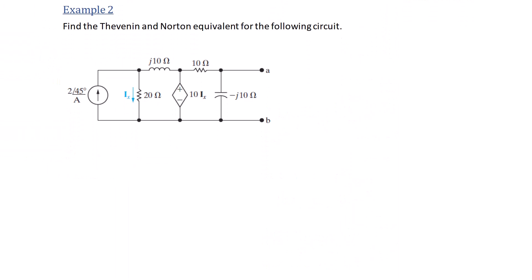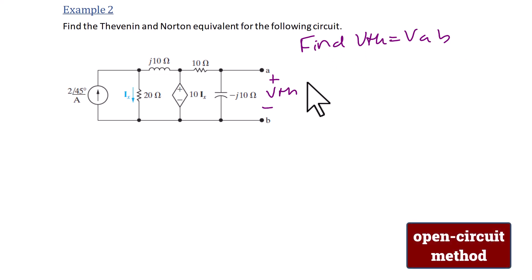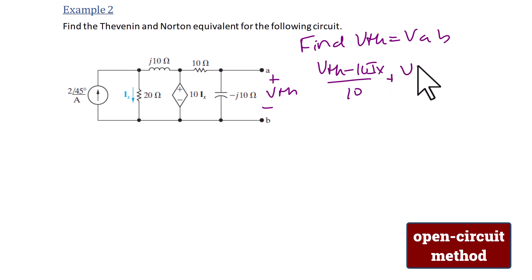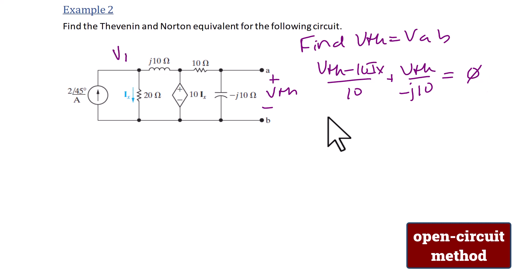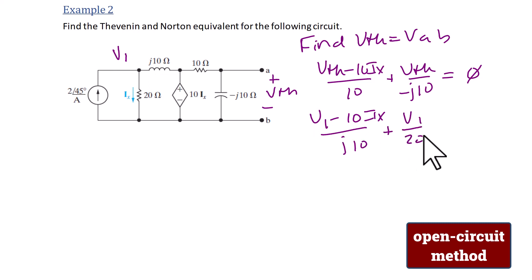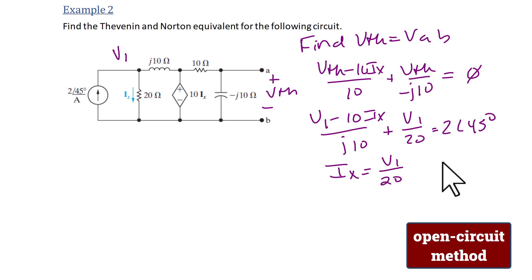Example 2: Find the Thevenin and Norton equivalent for the following circuit. Note that this circuit has a dependent source 10I_x. To find V Thevenin we'll use the open circuit method. Doing KCL at V Thevenin: (V_Thevenin minus 10I_x)/10 plus V_Thevenin/(negative J10) equals zero. KCL at node V1: (V1 minus 10I_x)/(J10) plus V1/20 equals 2 angle 45 degrees. The constraint for the dependent voltage source is I_x = V1/20. Solving yields V Thevenin = 10 angle 45 degrees.